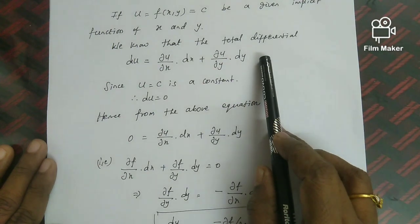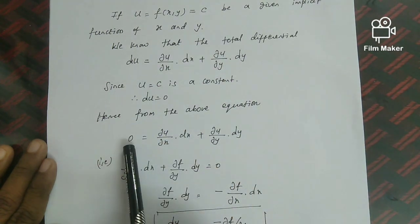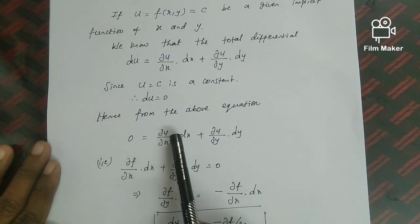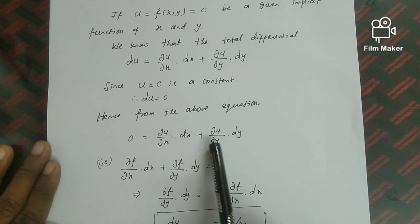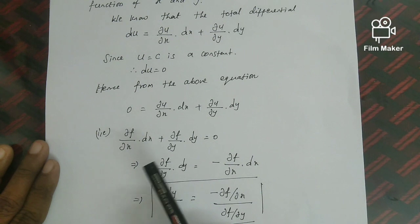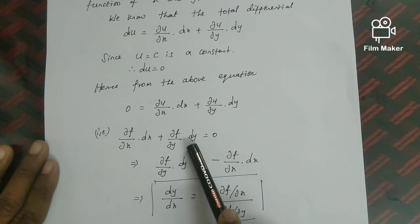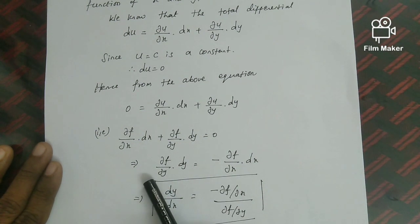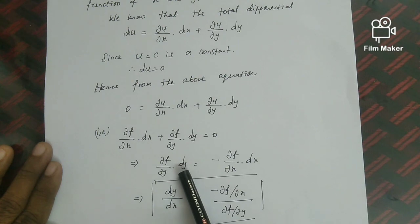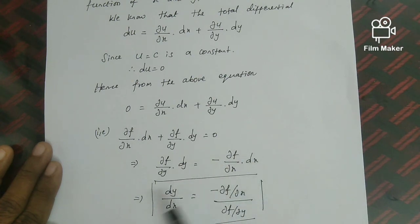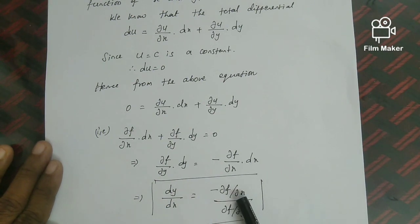Hence, from the above equation, setting du = 0: (∂u/∂x)dx + (∂u/∂y)dy = 0. That is, (∂f/∂x)dx + (∂f/∂y)dy = 0. From that, (∂f/∂y)dy = −(∂f/∂x)dx, which implies dy/dx = −(∂f/∂x)/(∂f/∂y).